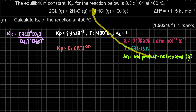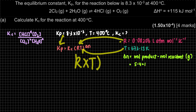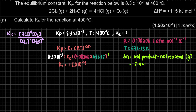Moles of product: 4 + 1 = 5. Moles of reactant: 2 + 2 = 4. So ΔN = 5 − 4 = 1. Now we have all the information for the calculation. We can substitute all values: remember it must be (RT) raised to the power of ΔN. Since ΔN = 1, you will get Kc = 1.5 × 10⁻⁴.